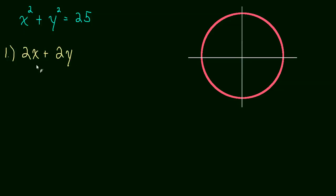and then multiply by the derivative of the inside. And the derivative of y is just dy dx. So we have to multiply by dy dx. And then the derivative of 25 is just 0.